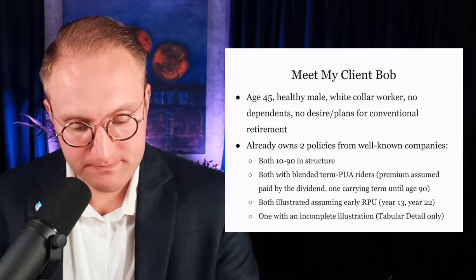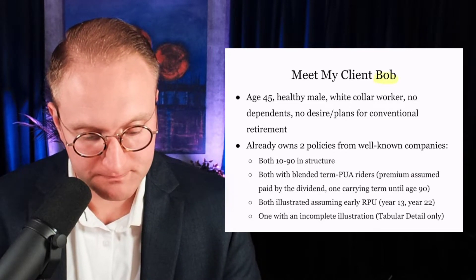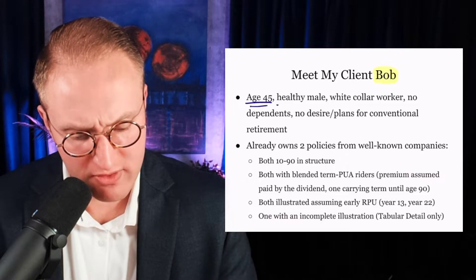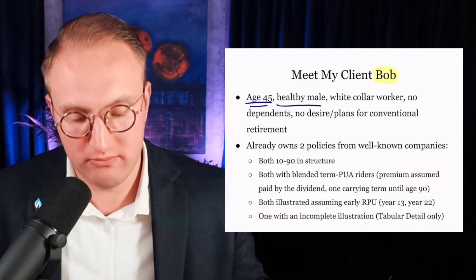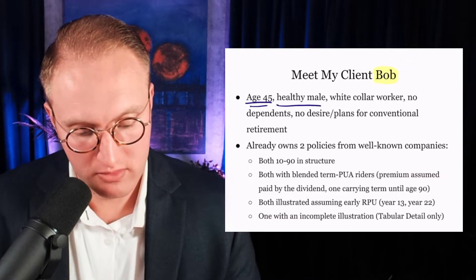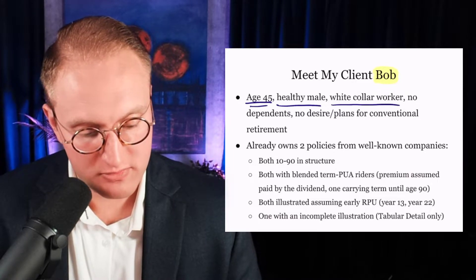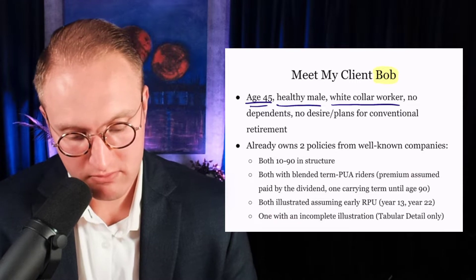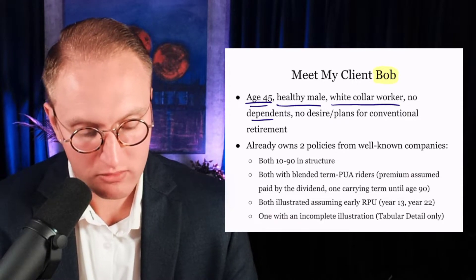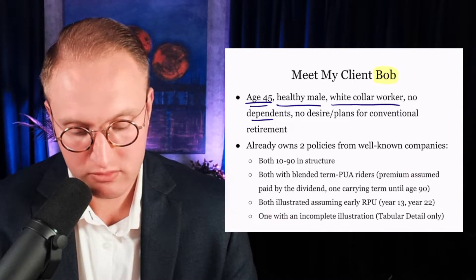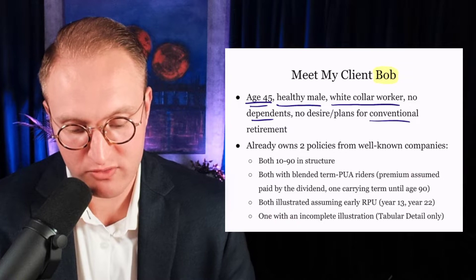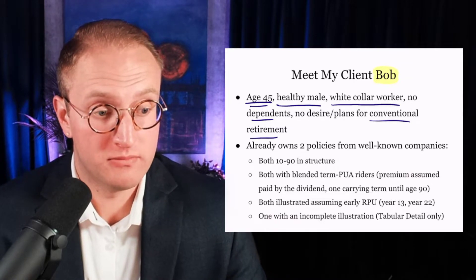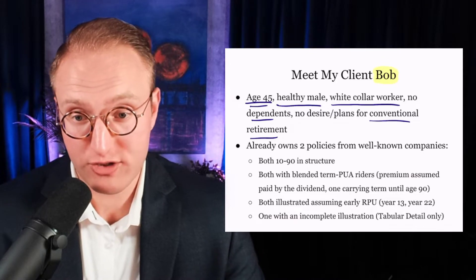Alright, Bob. Let's meet Bob. Bob is 45 years old. He's a generally healthy male — not super fit, but healthy. A white-collar specialized worker. No dependents. No desire for or intentions to enter conventional retirement. He likes his work, likes what he does, derives satisfaction from his work — and doesn't want to stop at age 62.